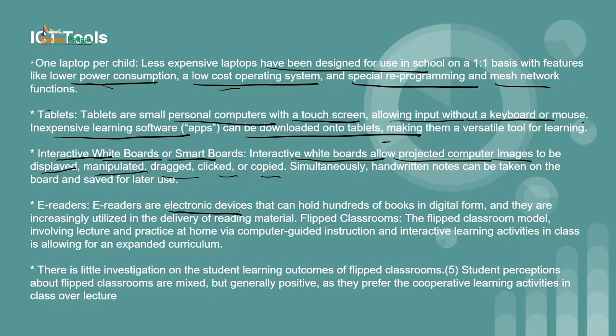E-readers are electronic devices that can hold hundreds of books in digital form and are increasingly utilized in the delivery of reading material. Reading materials are getting successful and you can also adjust the light of the e-reader — if you want to make it bright or slightly less bright, you can do that.